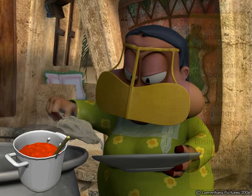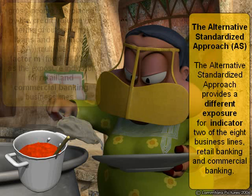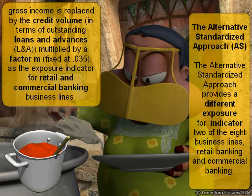The alternative standardized approach provides a different exposure indicator for two of the eight business lines: retail banking and commercial banking. Gross income is replaced by the credit volume in terms of outstanding loans and advances multiplied by a factor M, fixed at 0.035 by Basel, as the exposure indicator for retail and commercial banking. The loans and advances are non-risk weighted and gross of provision, and the factor M represents the medium ratio of gross income from traditional banking to income from total loans and advances in G10 countries.